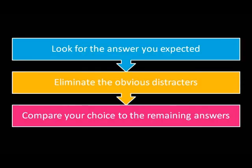What do you do when the answer you expect isn't there, or more than one option looks like what you had in mind? How do you find the best answer? First, look for the answer you expected — make a mental note of any answers that fit or partially fit what you expected the correct answer to be. Next, eliminate the obvious distractors; you'll probably be able to immediately strike at least one option, often two. Finally, compare your choice to the remaining answers. Does the one you liked originally really fit the best? Is there another option that better addresses the problem in the stem?